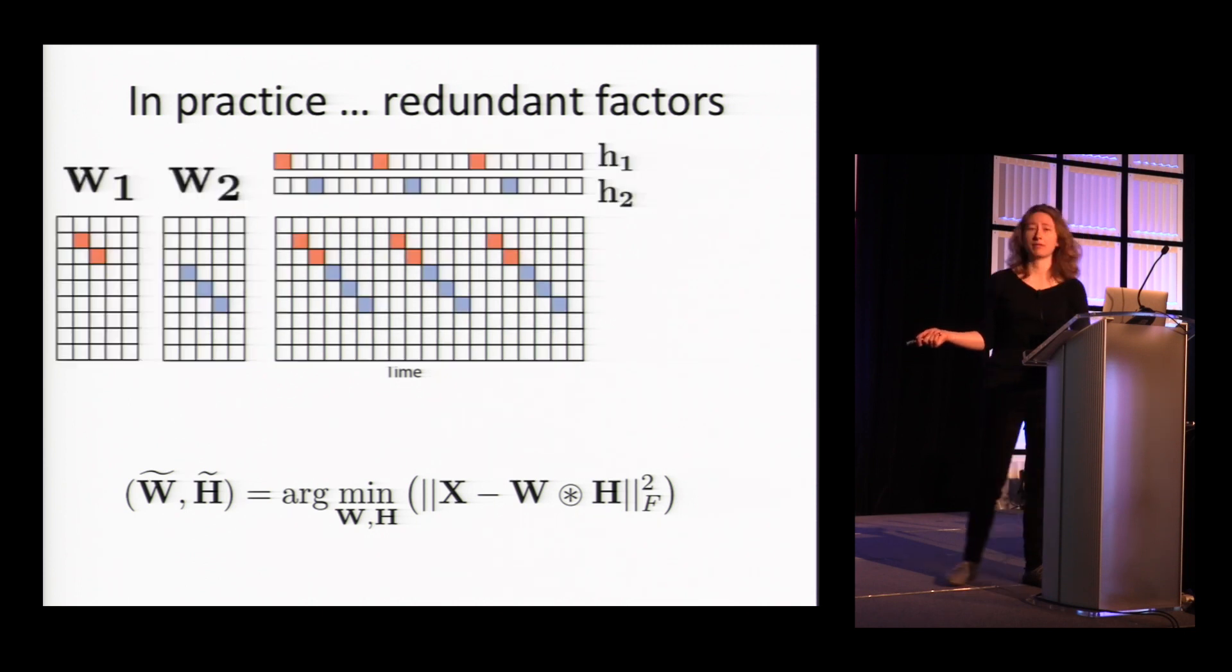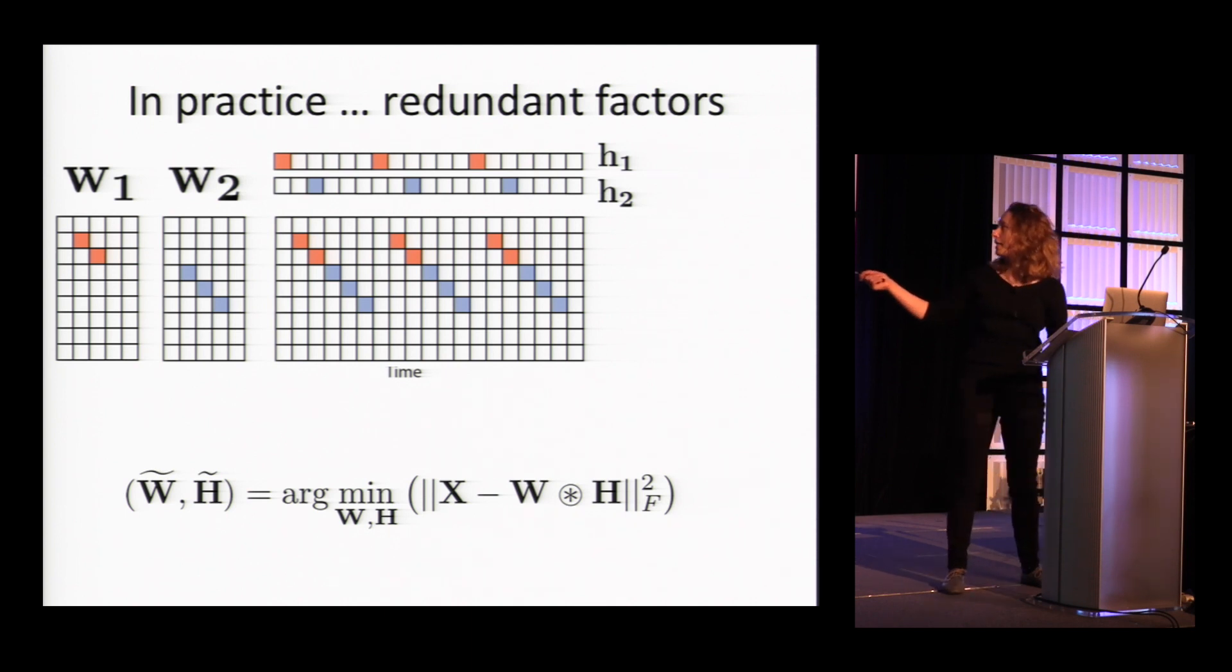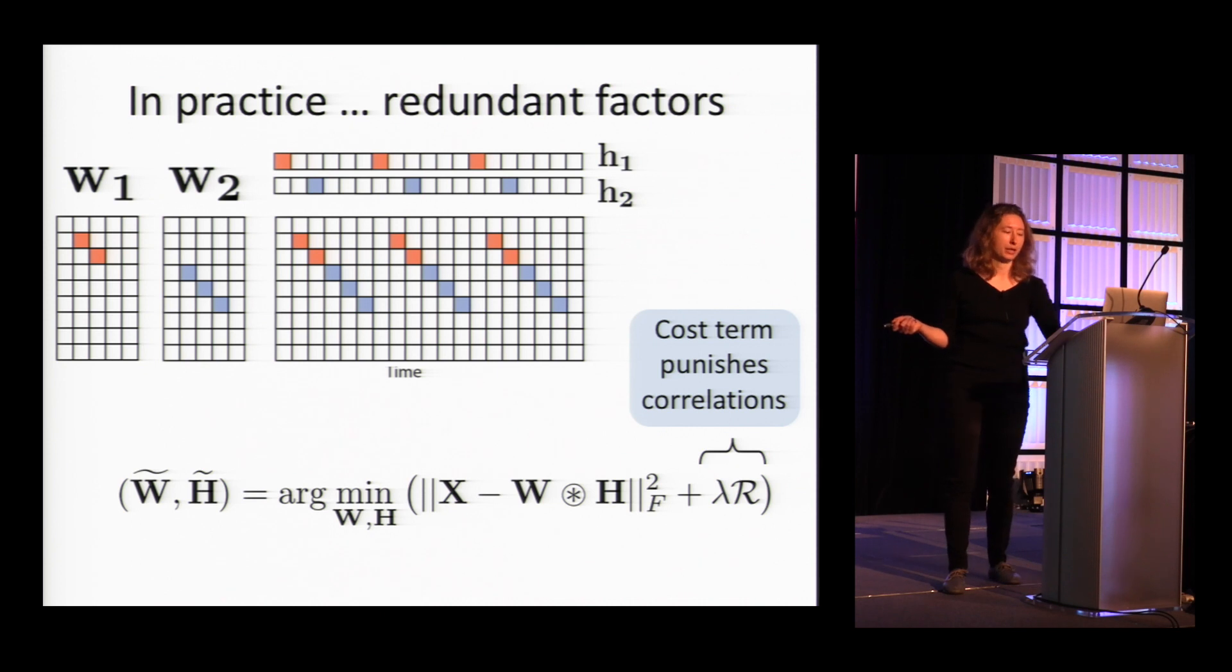But it has a problem because in practice, it gives you redundant factors. Here's an example of a redundant factorization. The data has just one sequence, but we've extracted two different patterns corresponding to the first part and the second part of this sequence. What we noticed is that in this case, there's a high degree of correlation between these redundant factors. So we wanted to add a term to the cost function which punishes correlations between factors.